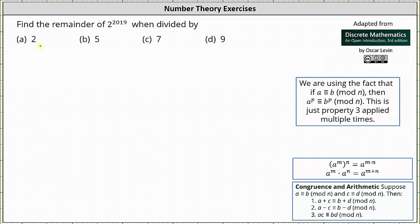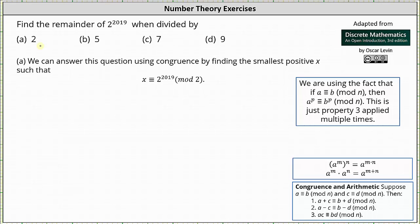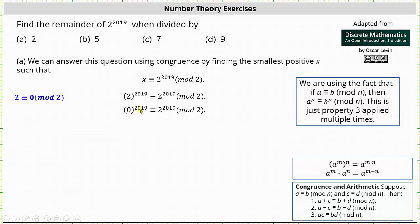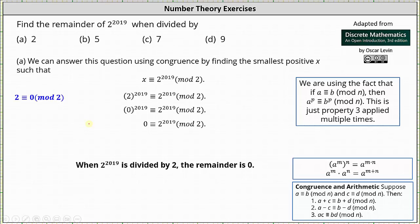However, we could also answer this question using congruence by finding the smallest positive x such that x is congruent to 2 to the power of 2019 mod 2. We look at powers of 2 mod 2. Notice 2 is congruent to 0 mod 2, so we can write 2 to the power of 2019 is congruent to 0 to the power of 2019 mod 2, which simplifies to 0. Because 0 is greater than or equal to 0 and less than 2, we know 0 is the remainder when 2 to the power of 2019 is divided by 2.